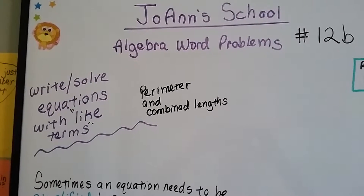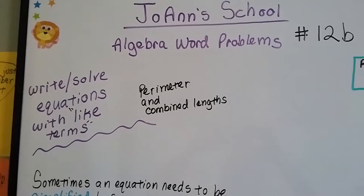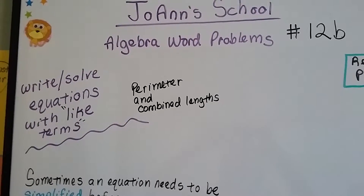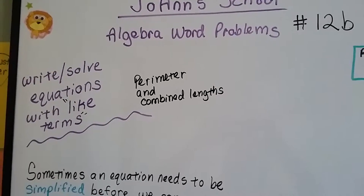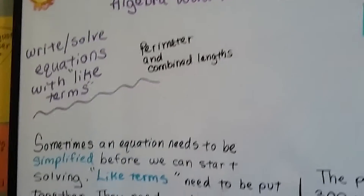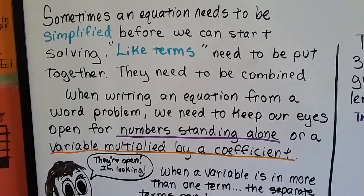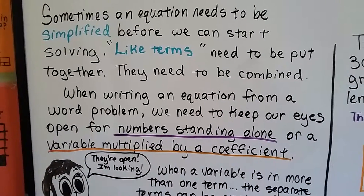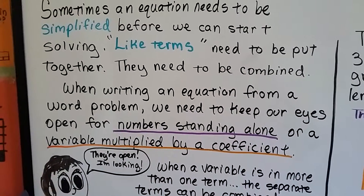Algebra word problems number 12b: write and solve equations with like terms. These are going to be problems about perimeter and combined lengths. Sometimes an equation needs to be simplified before we can start solving it, and like terms need to be combined.